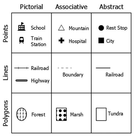Numerals are symbols for numbers. Alphabetic letters may be symbols for sounds. Personal names are symbols representing individuals. A red rose may symbolize love and compassion. The variable x in a mathematical equation may symbolize the position of a particle in space. In cartography, an organized collection of symbols forms a legend for a map.